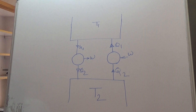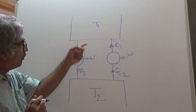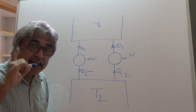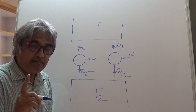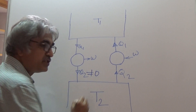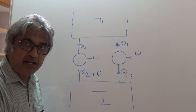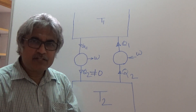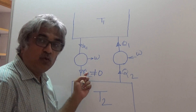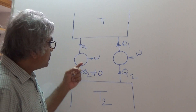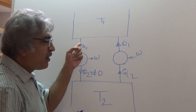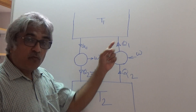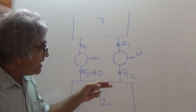Now, what does Kelvin-Planck say? Kelvin-Planck says Q2 cannot be equal to zero. You can go back to the previous video if any conceptual clarity is required. So Q2 cannot be zero — some heat has to be rejected. You cannot convert all the heat into work for an engine working in a cycle. That is the Kelvin-Planck statement.